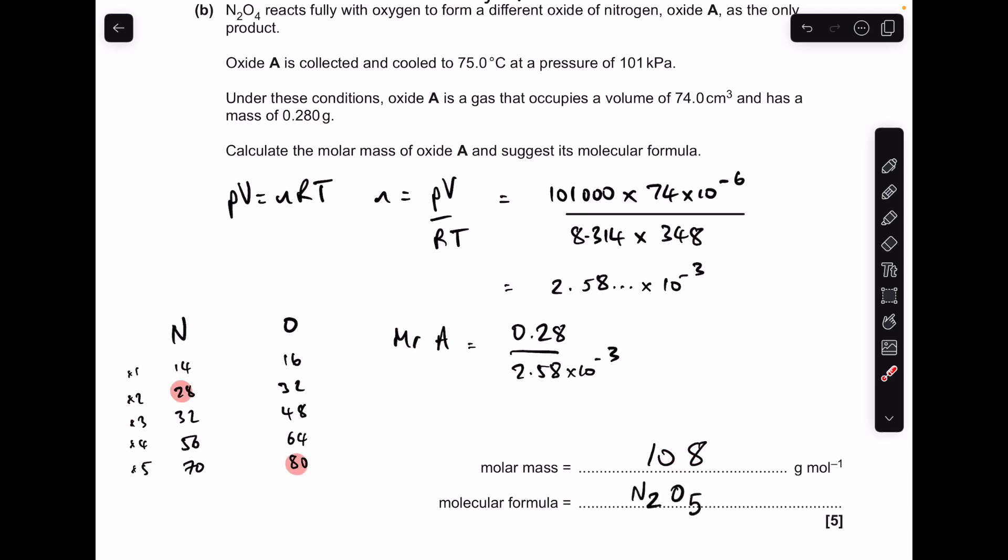And the only combination that will do that is 2 nitrogens, 28, and 5 oxygens at 80. So they combine, obviously, to give that 108. So the molecular formula is N2O5.